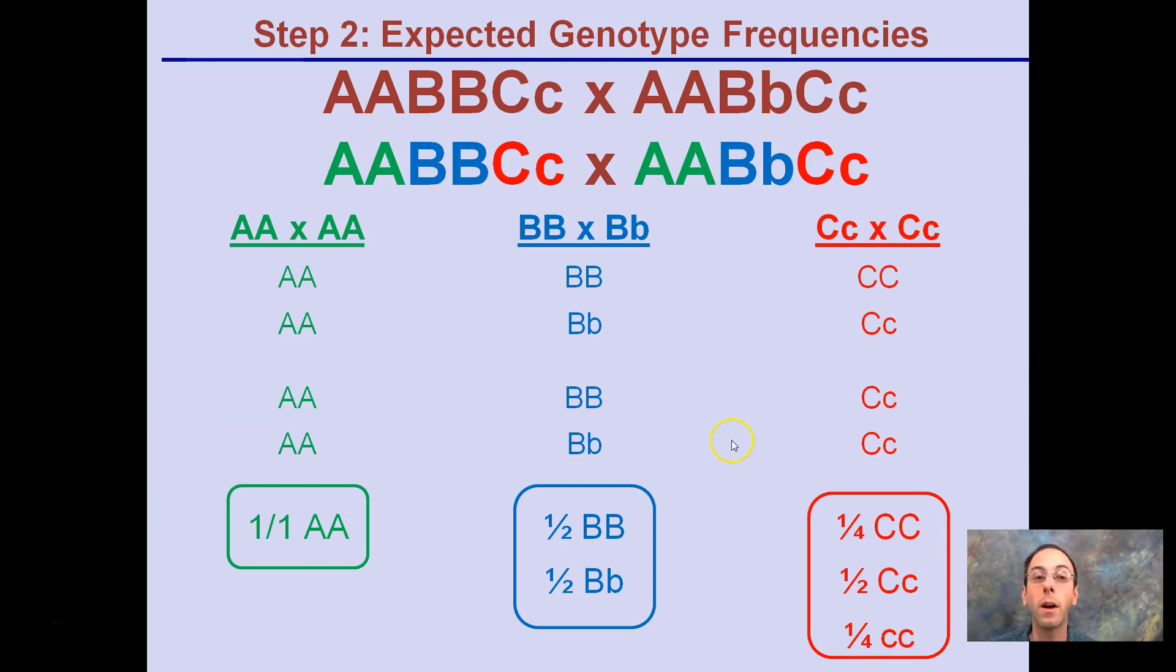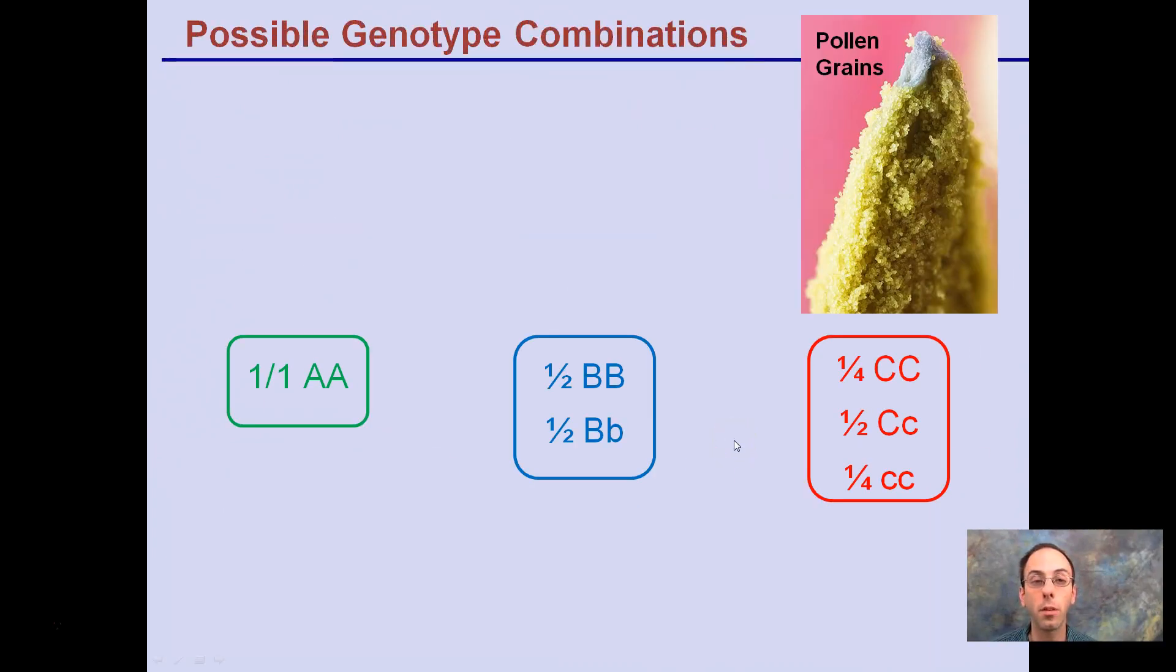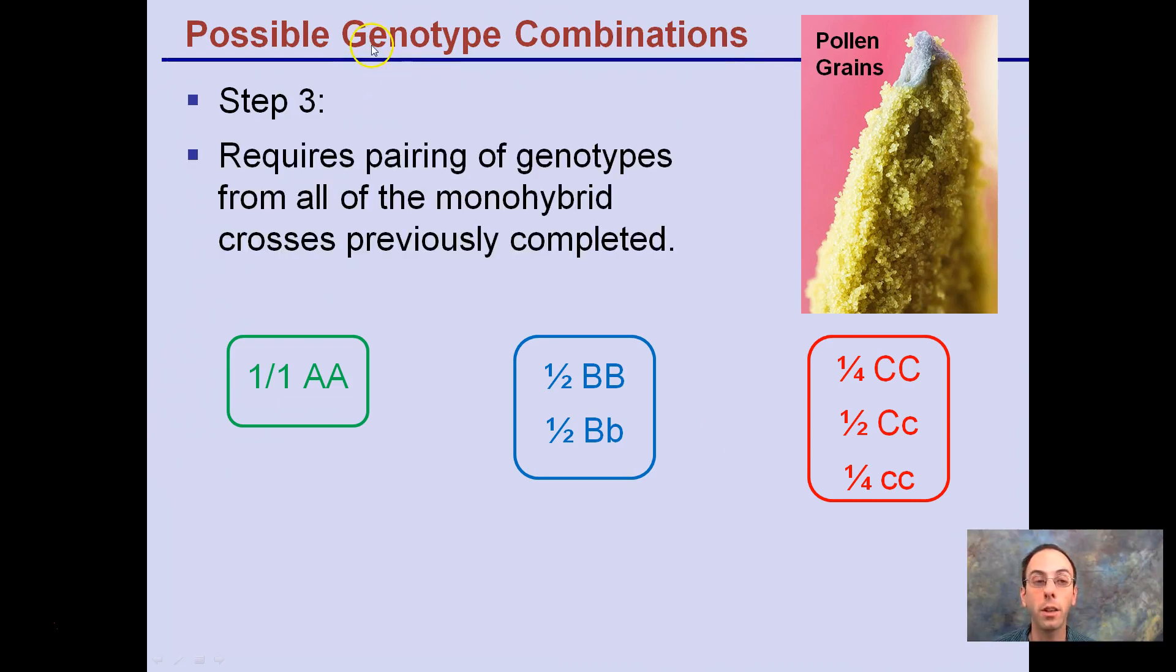So how do we put all these genotype frequencies together? Well, first off, we have to identify the possible combinations of genotypes. This requires the pairing of genotypes from all the monohybrid crosses previously completed. Here we're talking about plants, we're looking at pollen grains.